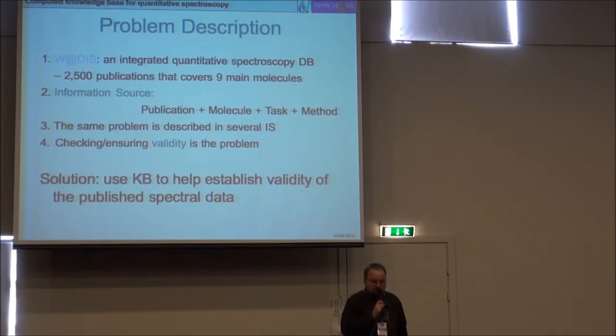But the same problem can be described in different information sources, and the solutions can be different from source to source. So we have a problem. Sometimes data is consistent through different sources, sometimes it's not, and it's mainly because different methods have different precision. So there are more precise methods, there are less precise methods, and having different solutions may give different results for the same problem. So the question now is how do we ensure or check the validity of the problem described in information sources? And for this purpose we built a knowledge base to help experts to establish the validity of published spectral data.